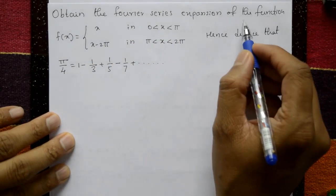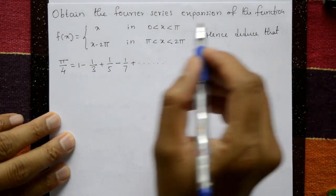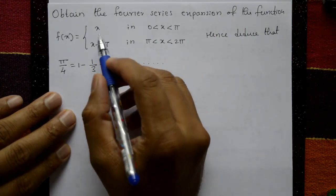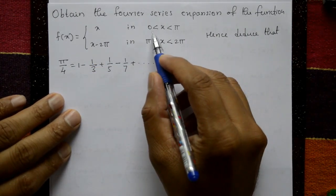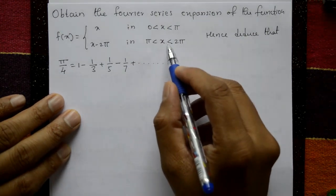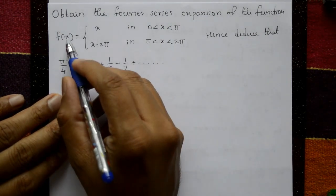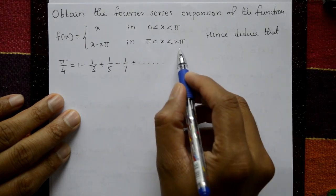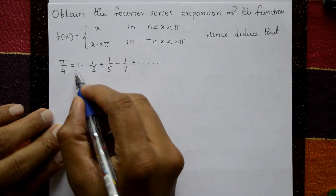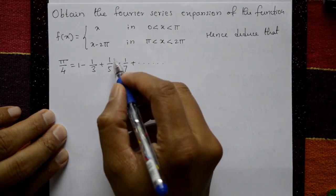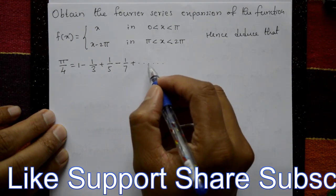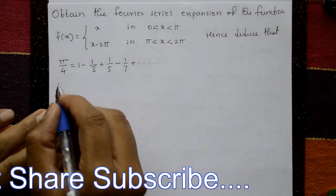Obtain the Fourier series expansion of the function f(x), which is a discontinuous function: f(x) = x on the interval 0 to π, and f(x) = x minus 2π on the interval π to 2π. That means f(x) is defined on the interval 0 to 2π. Hence, we need to deduce that π/4 equals 1 minus 1/3 plus 1/5 minus 1/7 plus 1/9 minus 1/11 and so on.